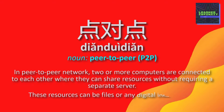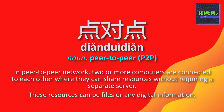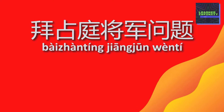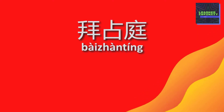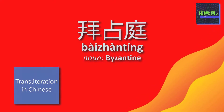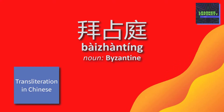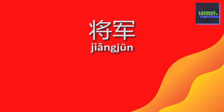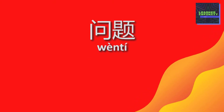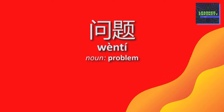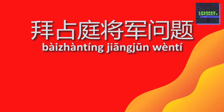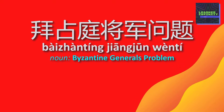Next is 拜占庭将军问题. 拜占庭 is simply equivalent to 'Byzantine' — yes, this is another case of transliteration in Chinese. 将军 is a noun which means general, and 问题 is a noun which means problem. This is easy to guess: 拜占庭将军问题 means the Byzantine General's Problem.